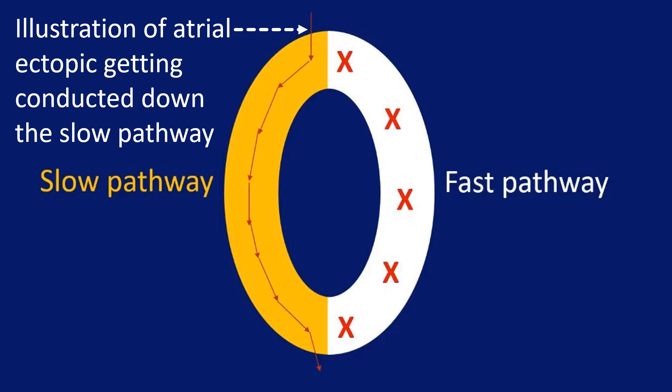The fast pathway conducts faster but has a longer refractory period and recovers later. The slow pathway has slower conduction but recovers earlier due to a shorter refractory period. An appropriately timed atrial ectopic beat can find the fast pathway refractory and get conducted down the slow pathway. When it reaches the lower common pathway of the AV node, it finds that the fast pathway has recovered and gets conducted back into the atrium in addition to the ventricle, producing an AV nodal echo beat. This is the mechanism of re-entry in AVNRT.